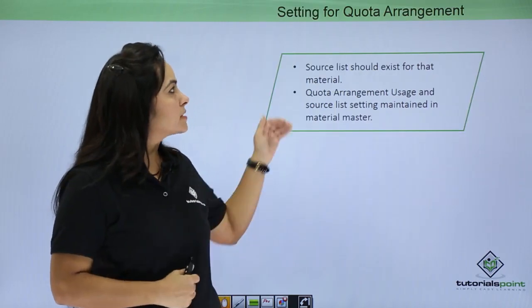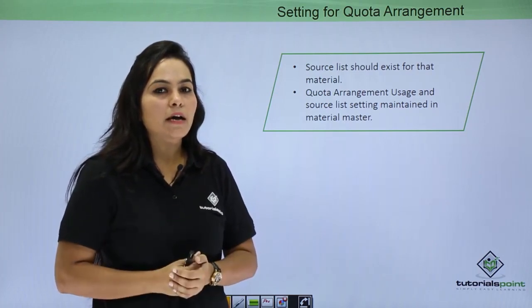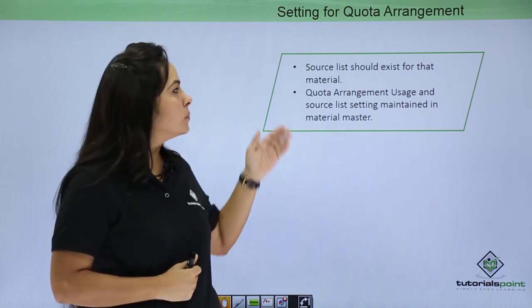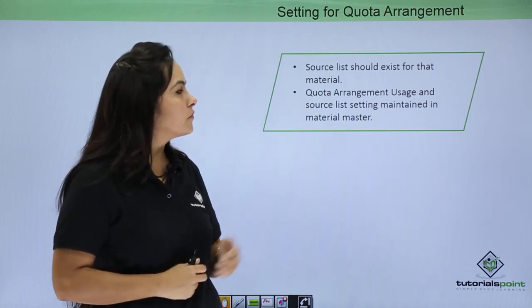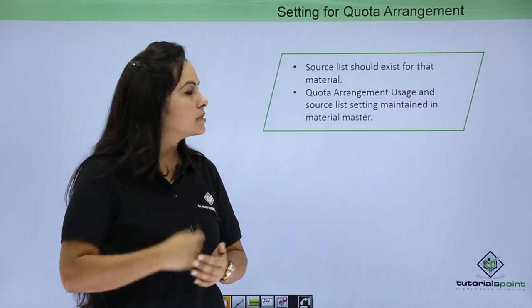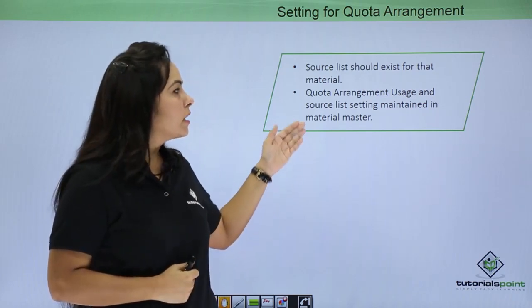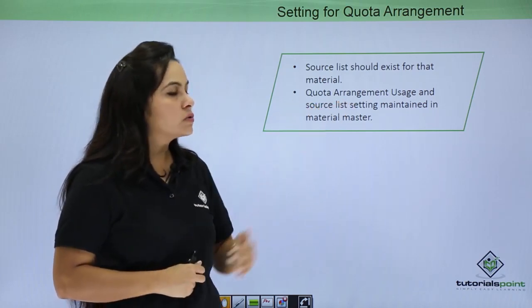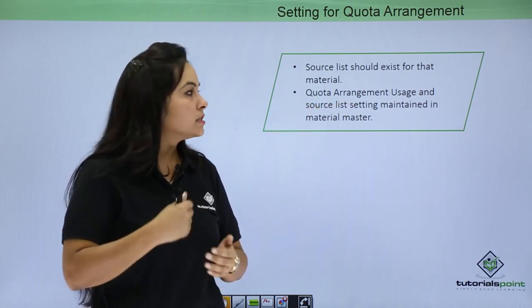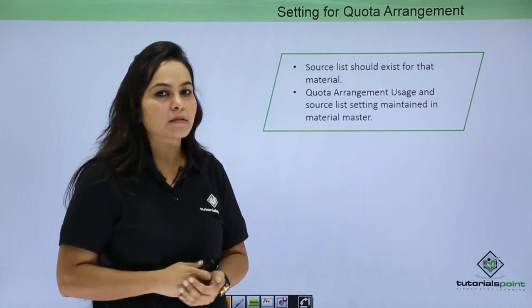Next is the setting for quota arrangement. Before maintaining quota arrangement there are two important settings. First, the source list should exist for that material. Secondly, quota arrangement usage and the source list checkbox should be maintained in material master.